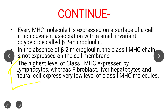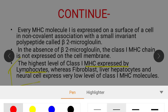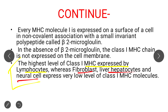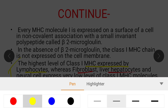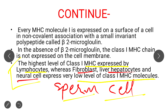The highest level of Class 1 MHC is expressed by lymphocytes. More importantly for exams, the lowest level of Class 1 MHC molecule is expressed in neural cells, fibroblasts, liver hepatocytes, and also some sperm cells. Please note this down — highest level expressed by lymphocytes, whereas fibroblasts, liver hepatocytes, neural cells, and sperm cells express very low levels of Class 1 MHC molecule.